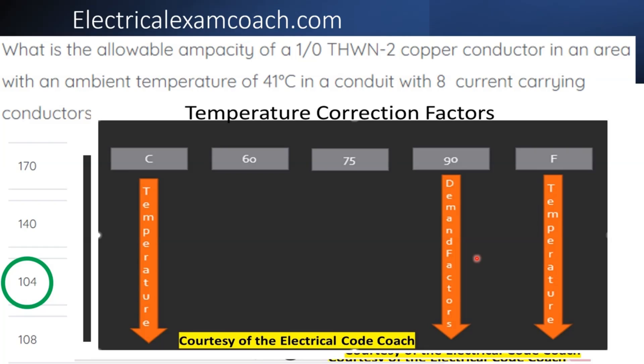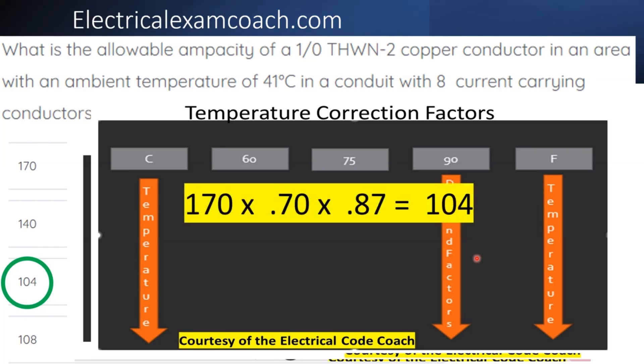Then we line up our math. Our original ampacity was 170 amps. We multiplied it by 0.70 and multiplied it again by 0.87, ending up with approximately 103.53 amps. In my opinion, we would round up to 104 amps. Let's get to it.